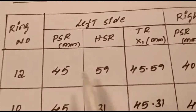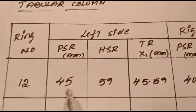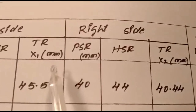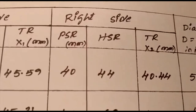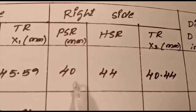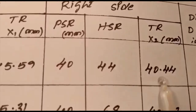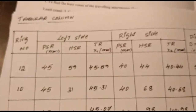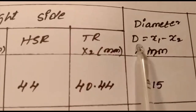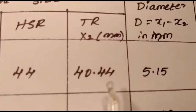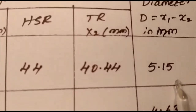I will explain one complete ring for both left and right side. The total reading on the left side, we consider as X1 in mm. Similarly, moving to the right side 12th ring: the PSR value is 40 and HSR value is 44, giving a total reading of 40.44, which we consider as X2. The diameter D equals X1 minus X2, giving 5.15 mm.